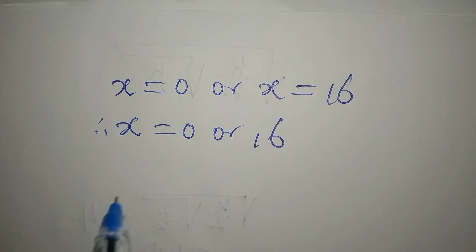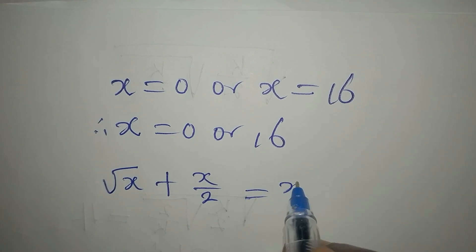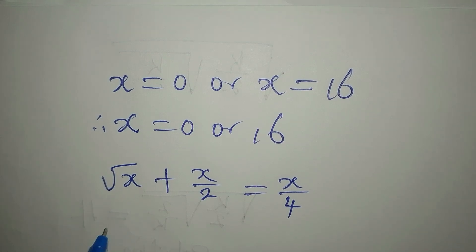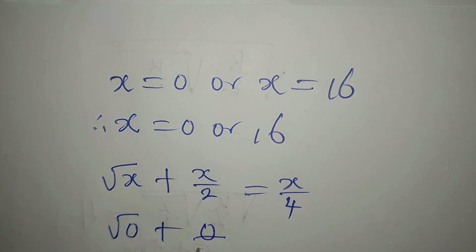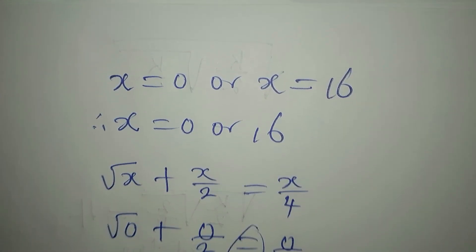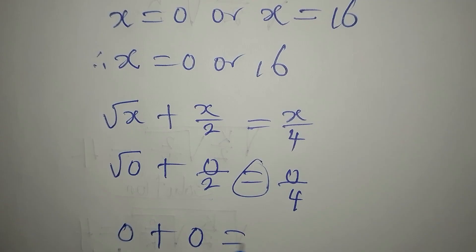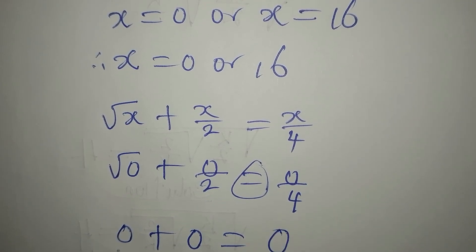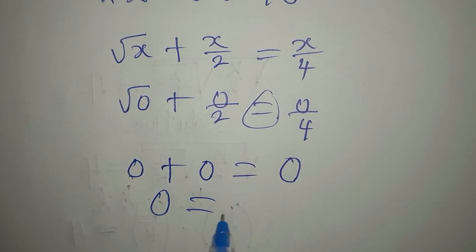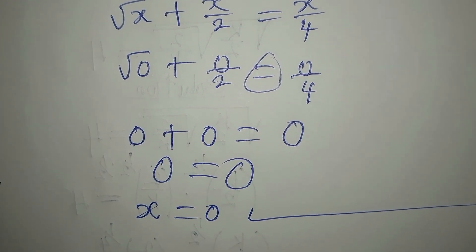The original equation is square root of x plus x over two equals x over four. Putting in x equals zero: square root of zero plus zero over two equals zero over four, which gives zero plus zero equals zero. So x equals zero satisfies the equation.